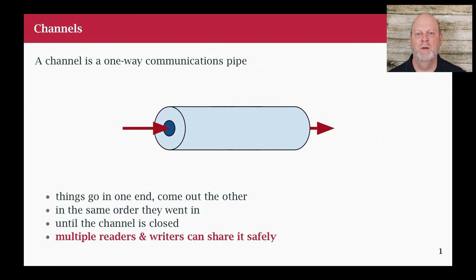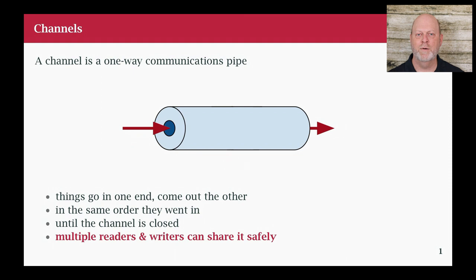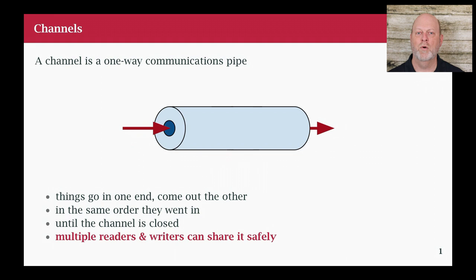I want to start with channels. A channel is like a Unix pipe. If you're not familiar with Unix pipes, it's a way of sending data from one program to another. Typically on the command line, you type a program name and a vertical bar and another program, and it redirects the output from one program to the input of another. The programs run in parallel, or at least they run concurrently, depending on your hardware. As data comes out of the first program, it's read by the second program. These pipes and channels in Go have a couple of properties. Stuff goes in one end and comes out the other — they're unidirectional — and stuff comes out in order.